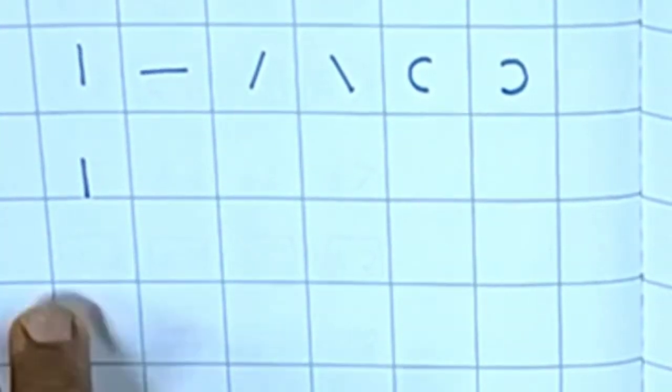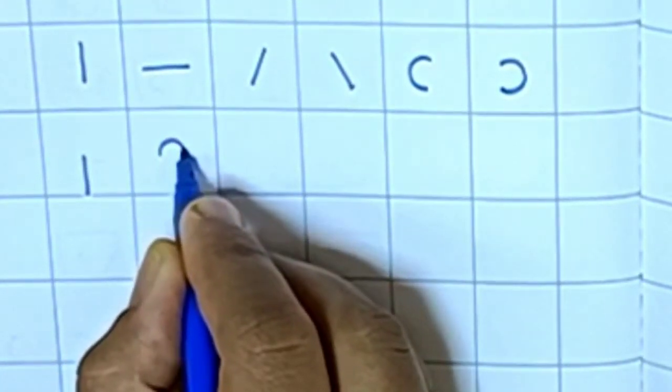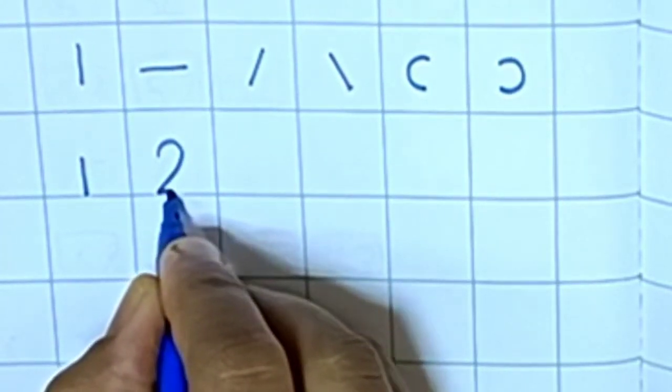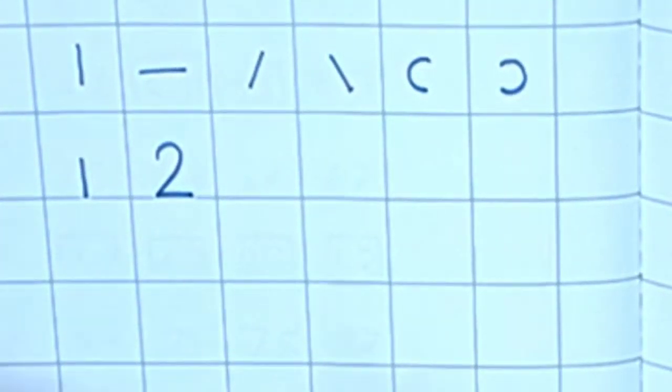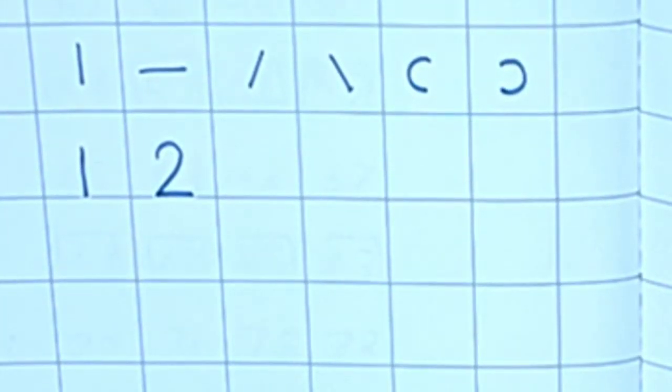It's like a standing line. Okay, then 2. How to write number 2? Curve, slanting, and sleeping line. Number 2, 1, 2.